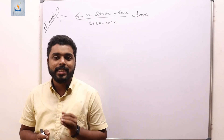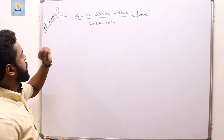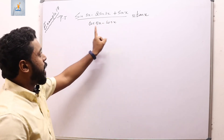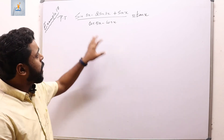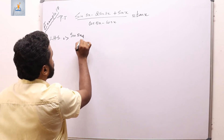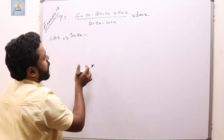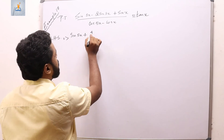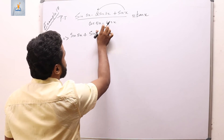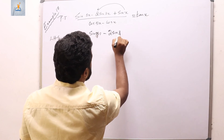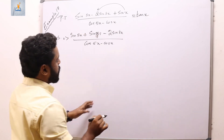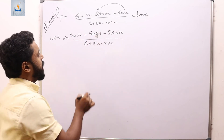Example 17: prove that (sin 5x − 2·sin 3x + sin x)/(cos 5x − cos x) = tan x. Consider the LHS. Rearranging: grouping sin 5x + sin x together and keeping −2·sin 3x, whole divided by cos 5x − cos x.